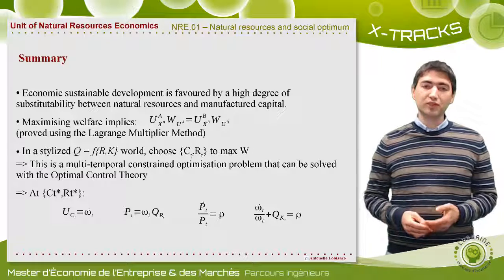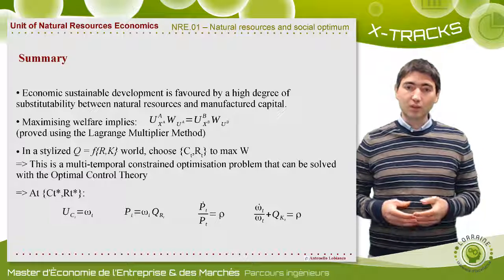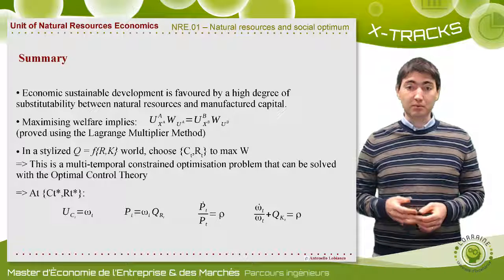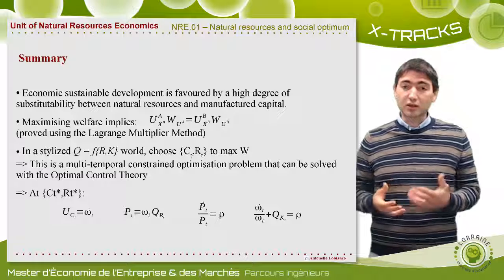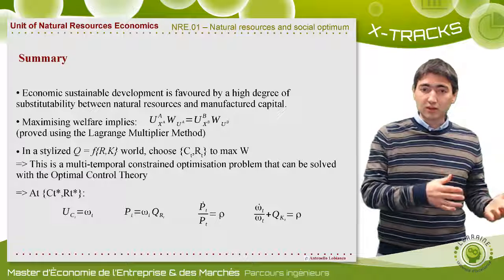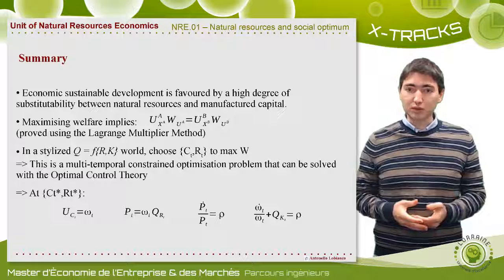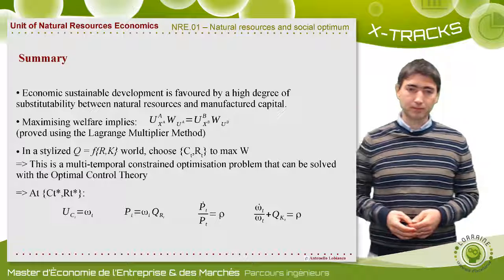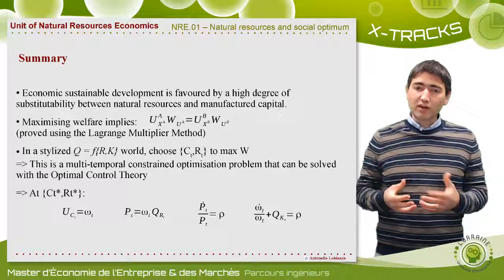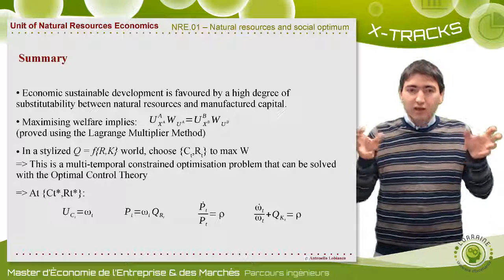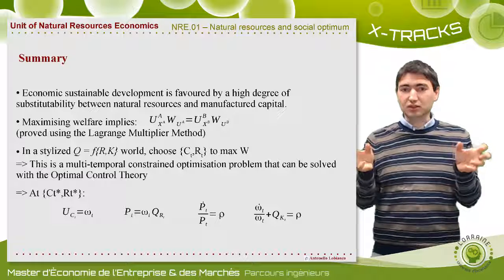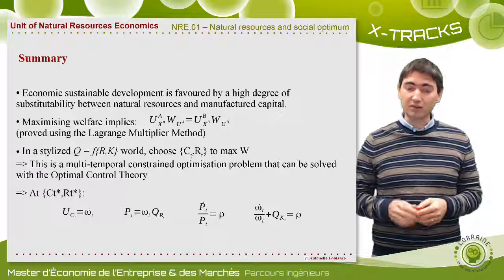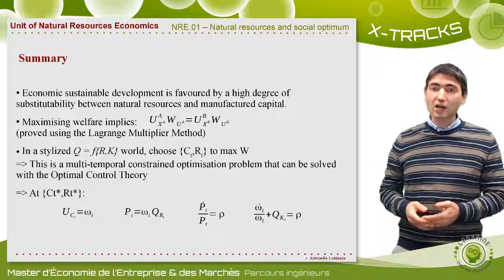We then moved to a multi-period analysis, where we stylised our world as a simple economic system that uses natural resources R and manufactured capital K to produce a single good Q that can be either consumed C — and hence produce utility U — or it can be added to the capital stock K to produce more output in the future. We put ourselves on the point of view of a benevolent dictator that can choose the level of consumption C and natural resources extraction R in each moment in time — this is why these two variables have a time index — to maximise the total welfare across all generations.